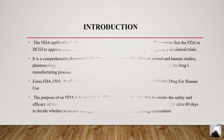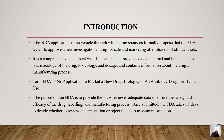The new drug application is a vehicle through which drug sponsors formally propose that the FDA or DCGI — Drug Controller General of India — approve a new investigational drug for sale and marketing after phase 3 of clinical trials. It is a comprehensive document with 15 sections that provide data on animal and human studies, pharmacology of the drug, toxicology and dosage, and contains information about the drug's manufacturing processes. Form FDA 356H contains information about the application to market a new drug, biologics, or an antibiotic drug for human use.